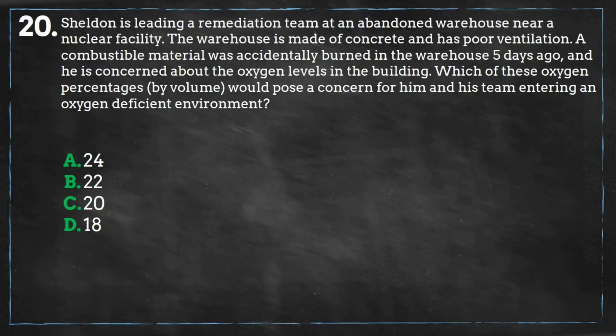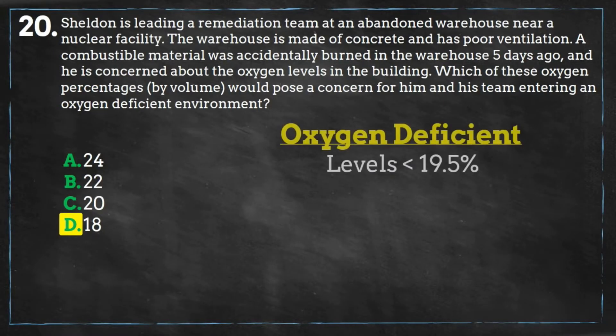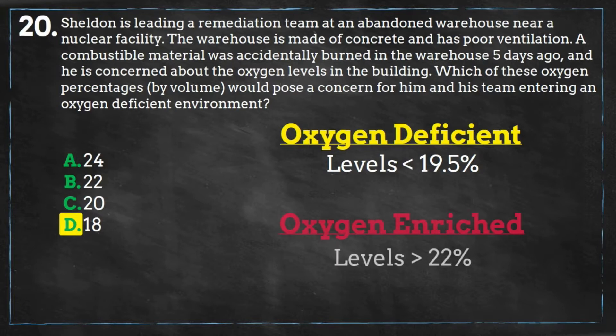Therefore, the correct answer is D, as it's the only choice below 19.5%. Any conditions in which oxygen levels are greater than 22% are considered to be oxygen enriched, which also poses various hazards.